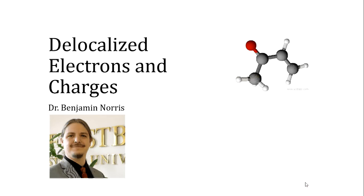The structure on the right is the structure of methyl vinyl ketone. Some of the electrons in methyl vinyl ketone's structure are delocalized, meaning that they are shared across multiple atoms. This delocalization helps us predict its reactivity that we might not otherwise be able to understand if we didn't know those electrons were delocalized. In this lesson we'll talk about how to figure out if electrons are delocalized, and we'll talk about the consequences of that delocalization.